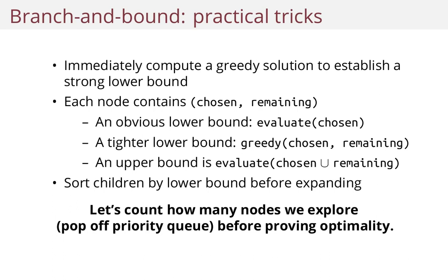So an obvious lower bound is just to evaluate the chosen Pokemon. So if you have four chosen, you can evaluate a party of four — you want to get to six. And obviously that's going to be a lower bound because adding something will never decrease the value.